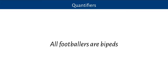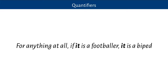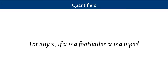Let's have a look at the quantifier 'all footballers are bipeds' and dig into that a little bit more. We're going to connect this to 'is a footballer' and 'is a biped' to make the connection close to claims like 'Socrates is a footballer' and 'Socrates is a biped'. When we say that all footballers are biped, we're going to analyze this as saying: for anything at all, if it's a footballer, it's a biped. I can apply this to anything I like — if it's a footballer, it's a biped. We're going to use a variable in our language — x is going to be the variable — and represent this as: for any x, if x is a footballer, x is a biped.